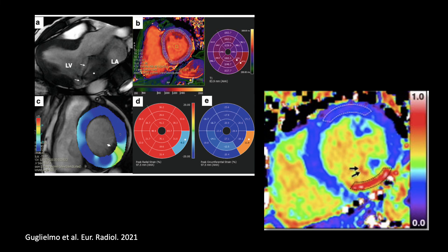Recent CMR techniques such as T1 mapping and CMR feature tracking are added value tools to identify subclinical left ventricle tissue changes in patients with MAD and mitral valve prolapse.